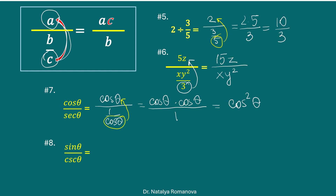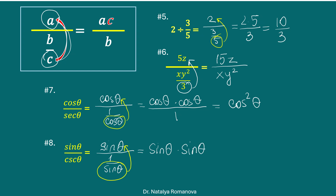Next example: sine theta divided by cosecant. We keep sine theta. Instead of cosecant, we use its definition and write 1 over sine theta. Now sine theta goes to the numerator. We have sine theta times sine theta divided by 1, which equals sine squared theta.